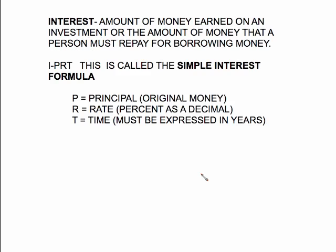Another application of percents is interest. The formula we're going to look at is the simple interest formula: I equals PRT — just multiplying three numbers together to get the simple interest. This interest could be money you're depositing in a savings account or money you're borrowing. There are other more complicated interest formulas, but this is just the simple interest formula. P stands for principal — the original amount of money. R is your rate, which must be expressed as a decimal, and T is time expressed in years.